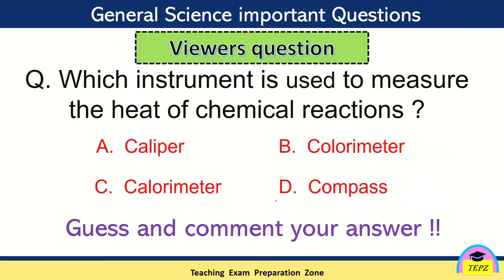Please keep your fingers on the keyboard and get ready to answer which instrument is used to measure the heat of chemical reactions. Option A, caliper. Option B, calorimeter. Option C, calorimeter. Or option D, compass. So quickly guess and comment your answer.